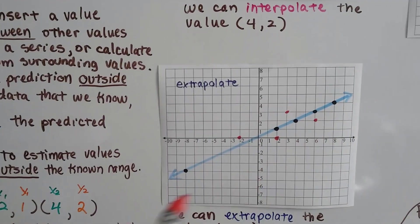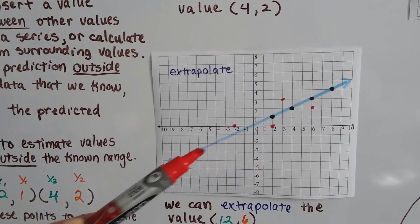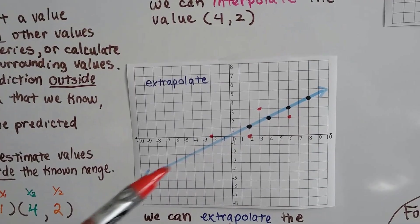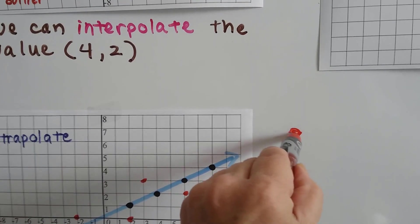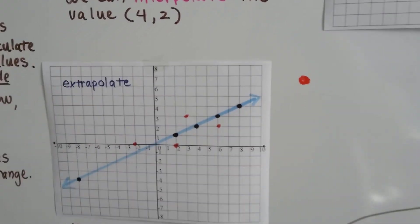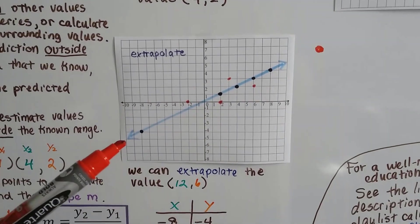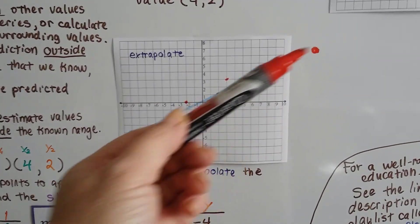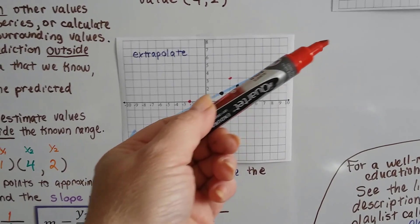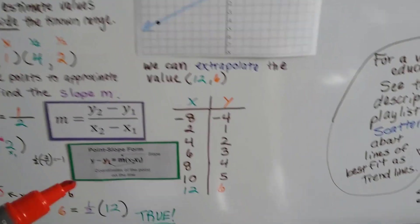So if we've got this cluster of points and we connected them with this blue line and we wanted to say, well, what would be the point over here? Could we say that there would be a point over here that would be on that line? Well, yeah, we can extrapolate that that would be a value because it continues on towards that point.